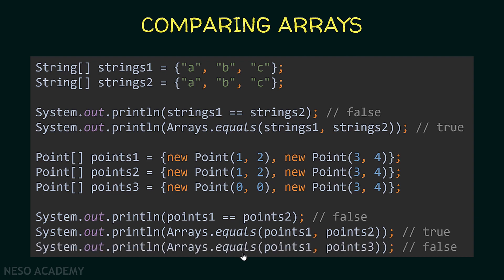Now let's see another example: comparing points one with points three. In this case we will see false, because the first point has x equal one and y equal two, but the corresponding point in points three has x equal zero and y equal zero, so these two points are not equal. So you might be asking: how does Java know to compare the content of a string, and how does it know that to compare points it should compare the abscissa and the ordinate?